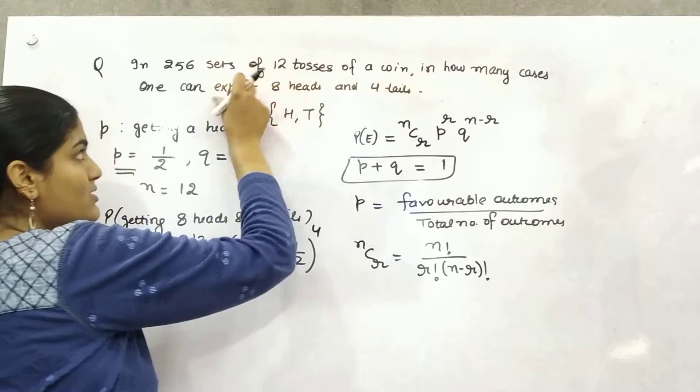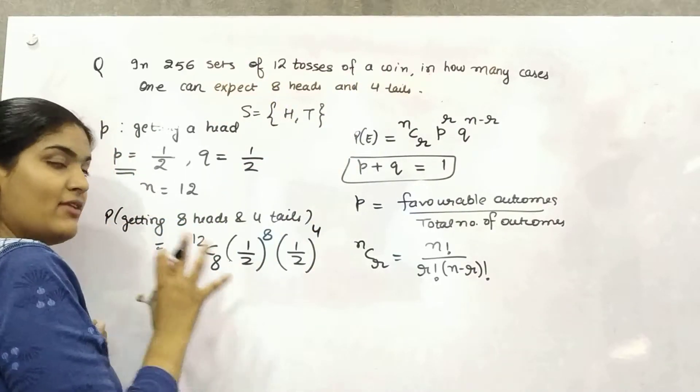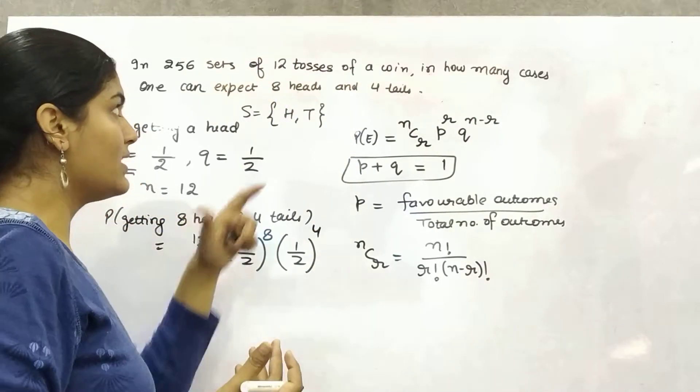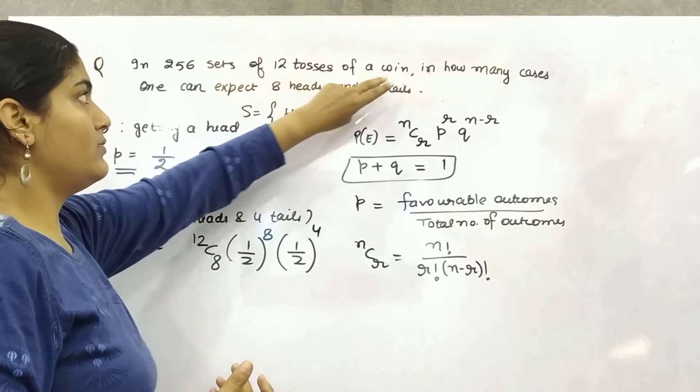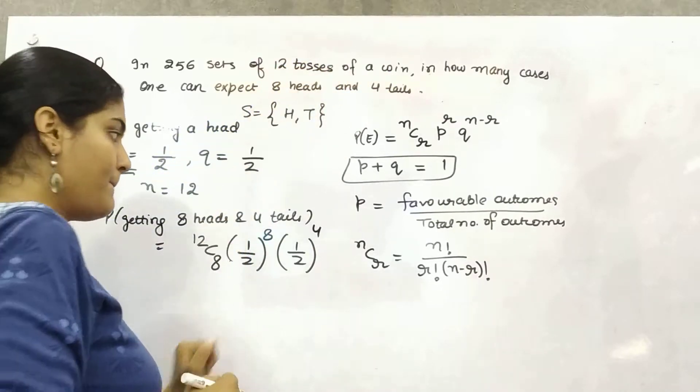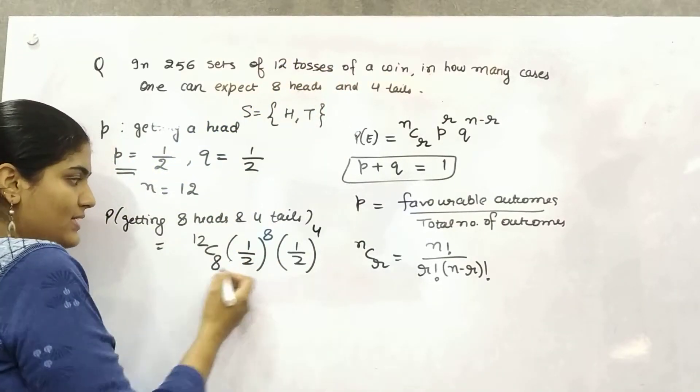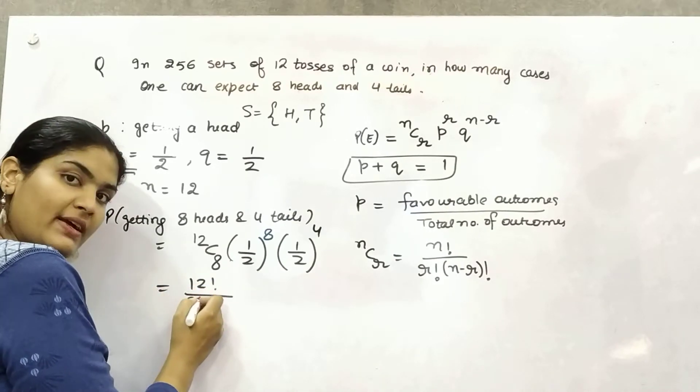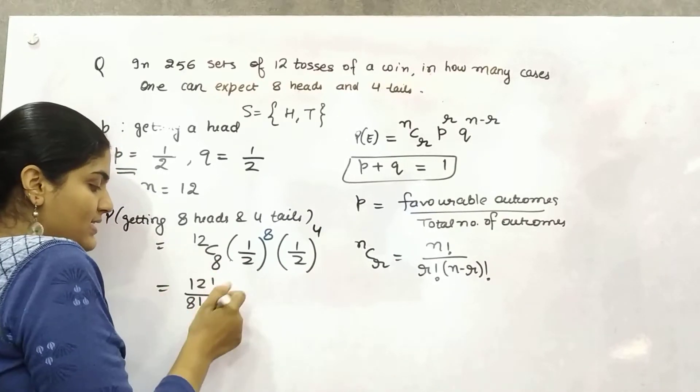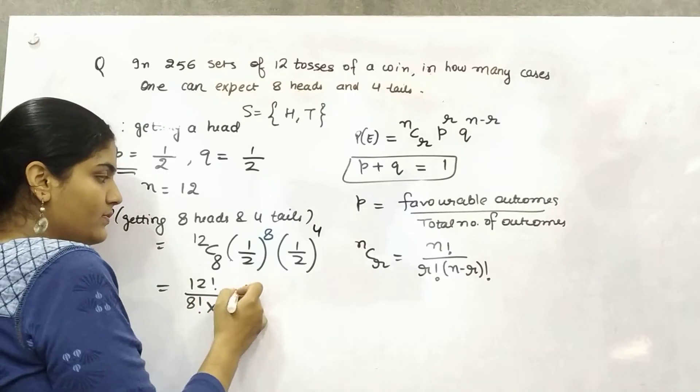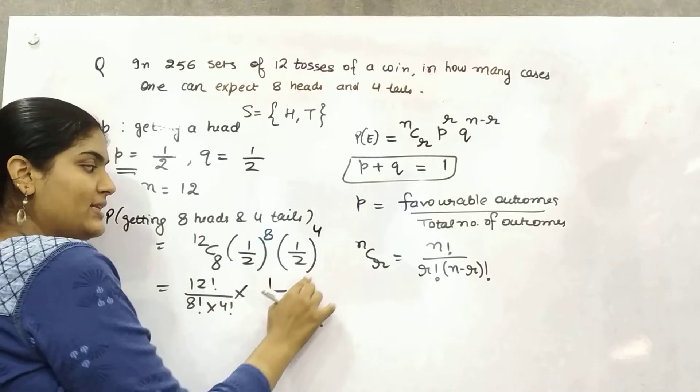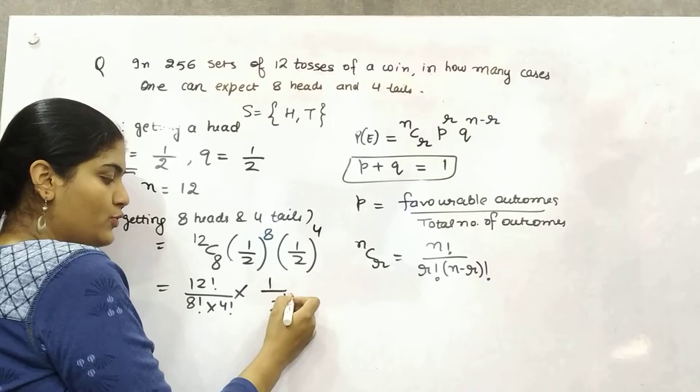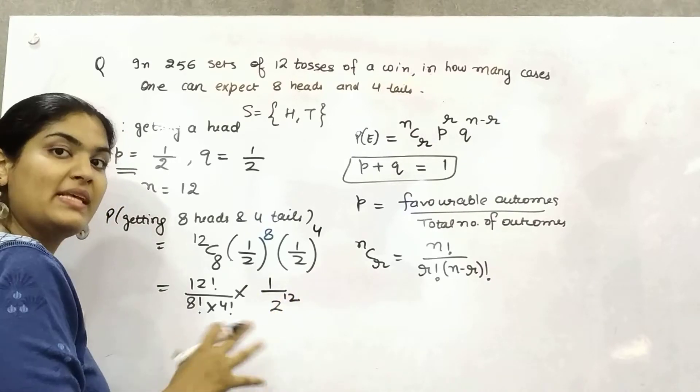That's how many cases you can expect 8 heads and 4 tails by tossing a coin 12 times. Now, how can you calculate it? So 12 factorial by 8 factorial, 12 minus 8 is 4 factorial. This is 2 raised to power 8, 2 raised to power 4. So 2 raised to power 12. Base same power add.